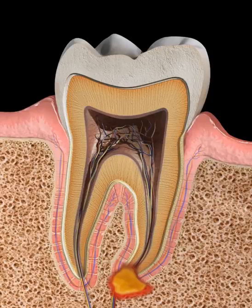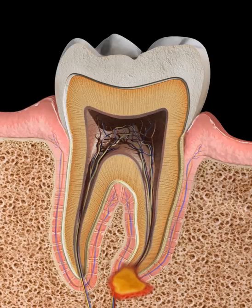Infection can cause an abscess to form at the root of the tooth. This can be treated by a procedure called apexification. Initially, the apex of the tooth is accessed by drilling deep into the tooth.